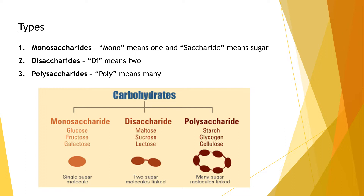Examples for monosaccharides are glucose, fructose, and galactose — all single sugar molecules. Examples for disaccharides are maltose, sucrose, and lactose, comprised of two monosaccharide molecules. Finally, polysaccharides have examples of starch, glycogen, and cellulose, in which many sugar or monosaccharide molecules are linked together to form them.